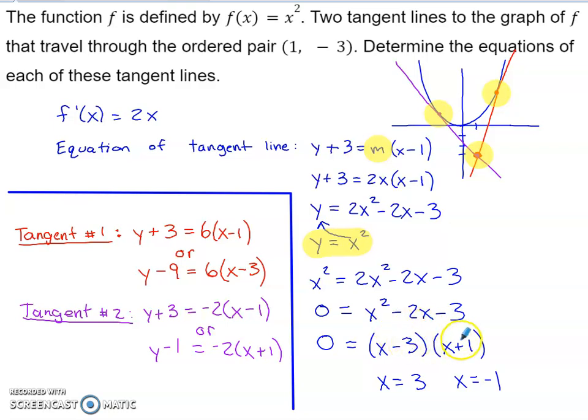I factored the right side of the equation. This factor is equal to 0 when x is 3. This factor is equal to 0 when x is negative 1.